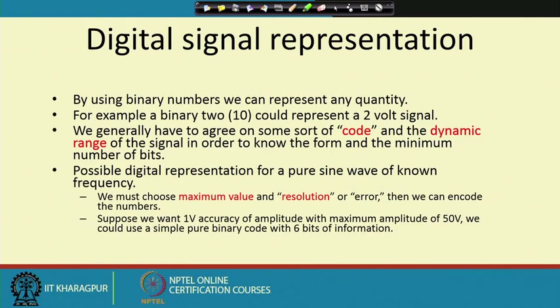This digital signal representation gives us the flexibility by which we can think about digital processing of signals from the environment. These analog signals that we are getting — if we want to process them digitally, we have to think about their representation, because anything you want to do first requires storing the information from the outside world. For storing the information, we have to go for digital form only. By using binary numbers, we can represent any quantity.